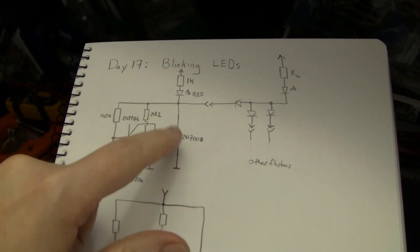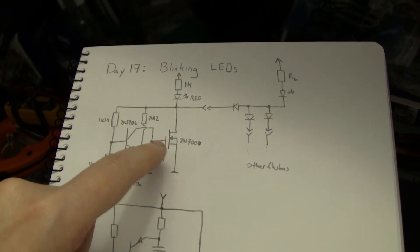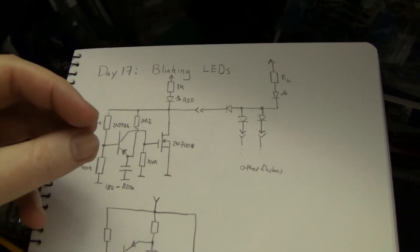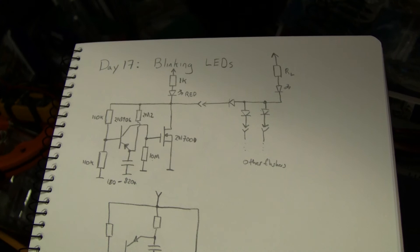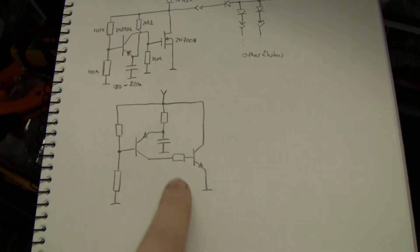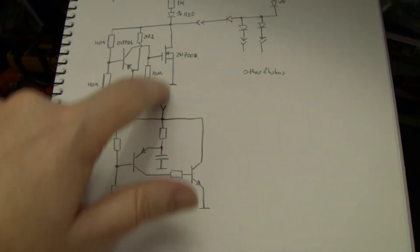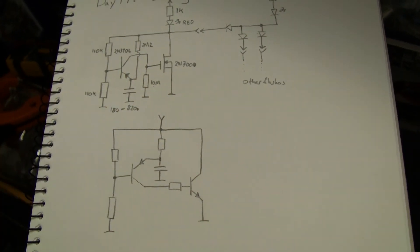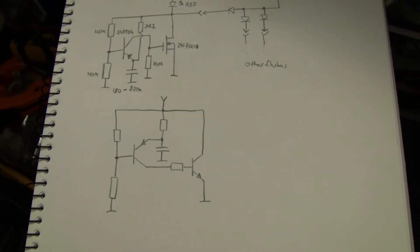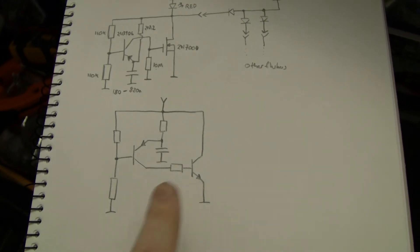This particular configuration is a little bit more likely to work in all conditions than the ones we've seen in other episodes where I've just got them directly connected like an SCR complementary pair. Having the extra load resistor and the resistor in here makes it much more likely to oscillate if you've chosen just random values. But again, Ohm's law is your friend.